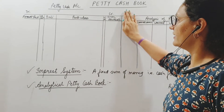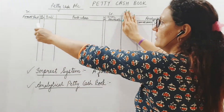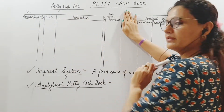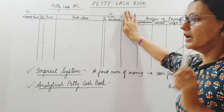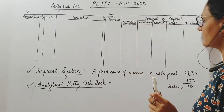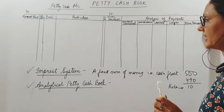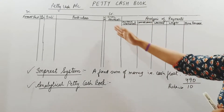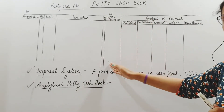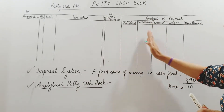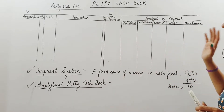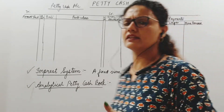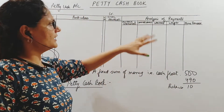A simple petty cash book just records amount received and total payments — that's it. But the analytical petty cash book also has an analysis of payments, meaning whatever you are spending is put into different columns so that you get to know how much is spent on what.